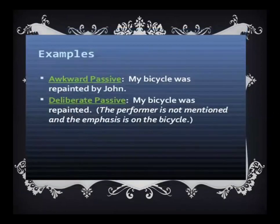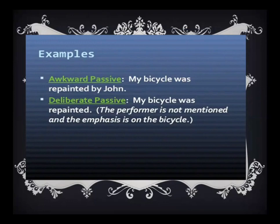Example: 'My bicycle was repainted by John.' Here, we are more emphasized on John — my bicycle was repainted by whom? By John. Now, the deliberate passive voice would be 'My bicycle was repainted.' Here the performer is missing, so we don't want to disclose our subject. This can also be considered under your passive voice situation.